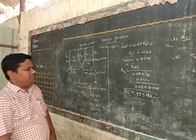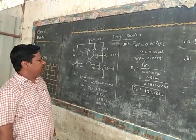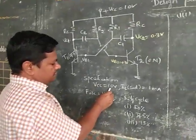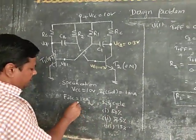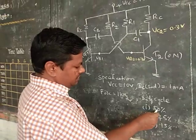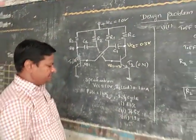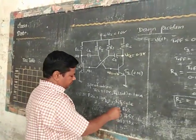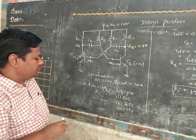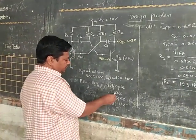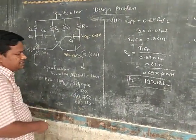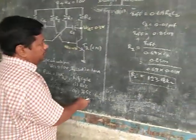This is the procedure to calculate resistor values. Designing is simply finding the resistor and capacitor values in the circuit. These are the given specifications: VCC 10V, IC saturation 1mA, frequency of oscillation 1 kHz. Design an astable multivibrator for three duty cycle cases: 50%, 75%, 15%. First, from the duty cycle, decide whether the oscillator is a symmetrical or unsymmetrical square wave oscillator. If it is 50%, that is a symmetrical square wave; less than or greater than 50% is an unsymmetrical square wave.